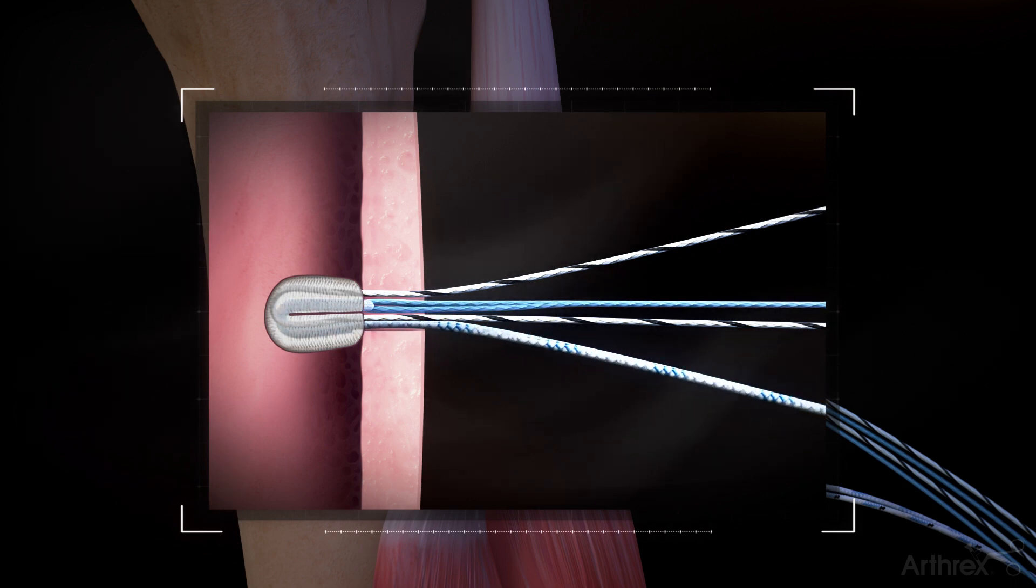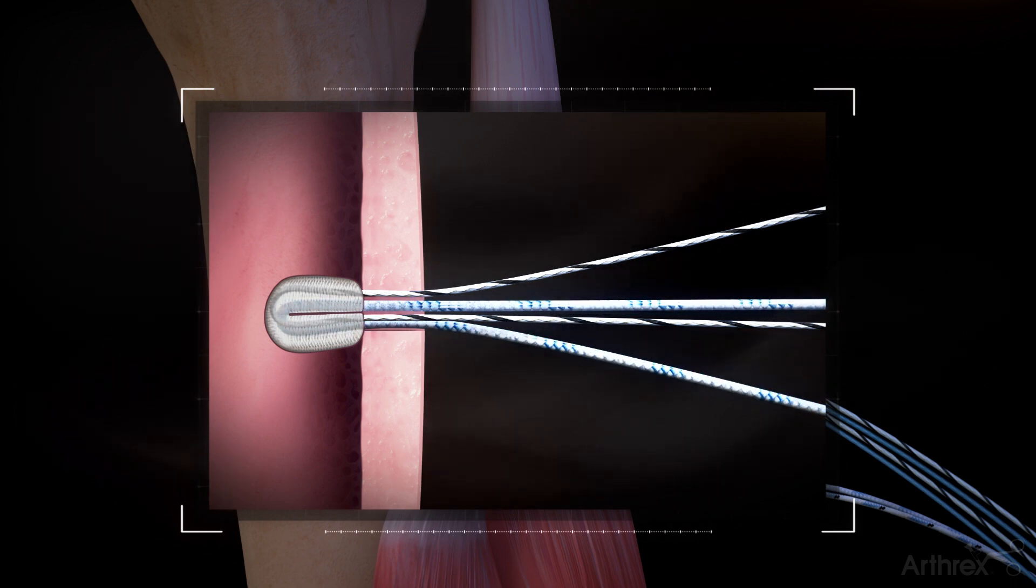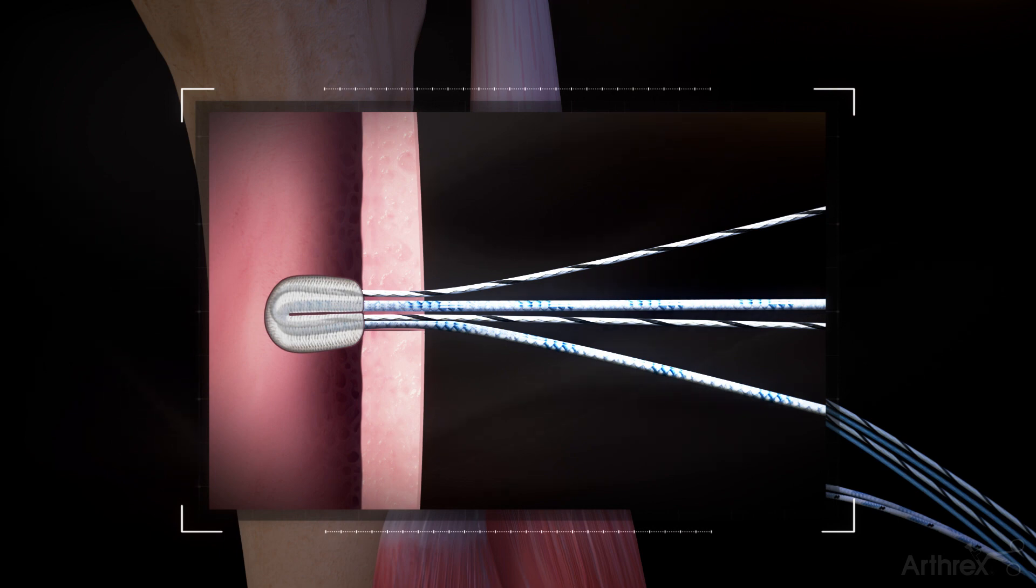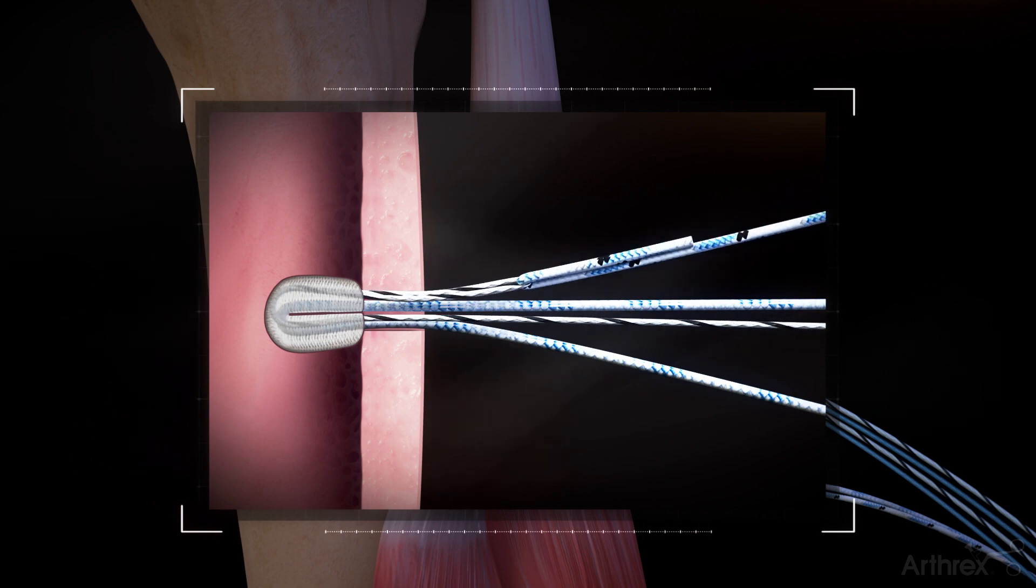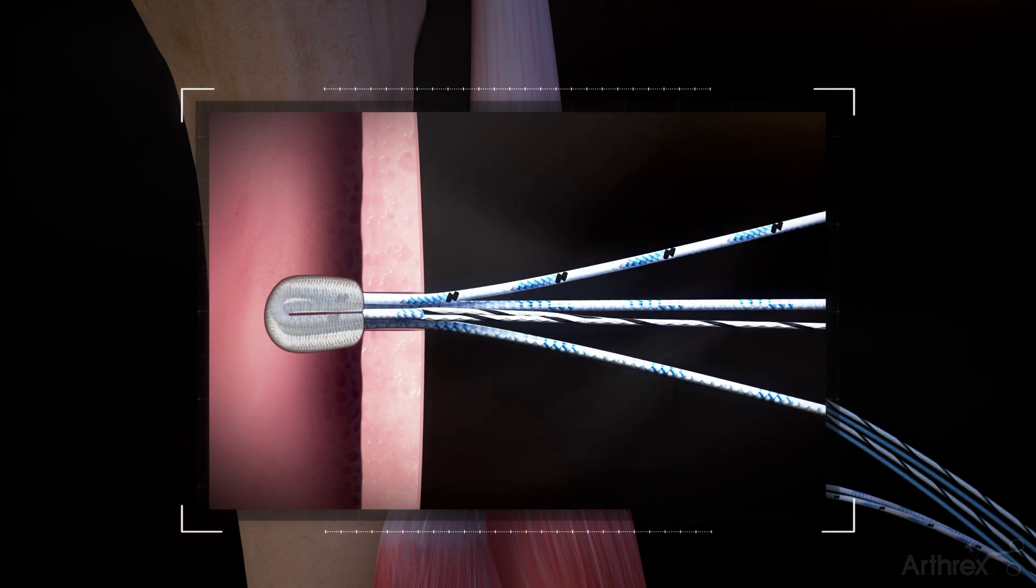Hold slight tension on the opposite suture links while shuttling to ensure the anchor remains in place. Pull lightly on the remaining shuttle link to verify that the button is set. Shuttle the second suture tag limb using the remaining link in the same manner.